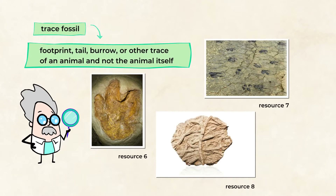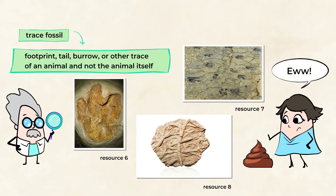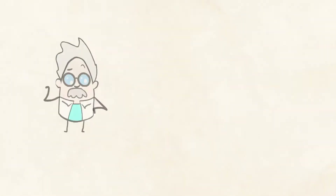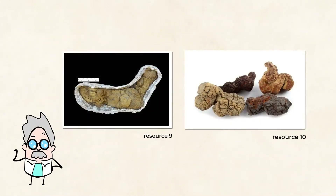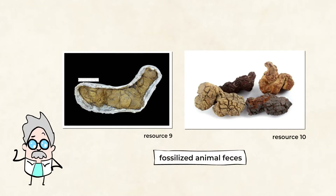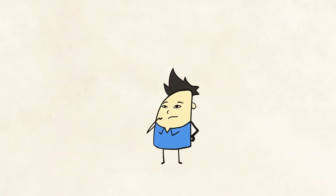Imagine seeing a footprint even though you haven't seen the real animal — you still know that the animal was in fact there because it left behind a print or a trace. Other great examples of trace fossils are burrows that an animal digs, or even when they leave behind poop. Gross — but how cool would it be to find poop from a prehistoric animal? So, how do these different things become fossils in the first place?